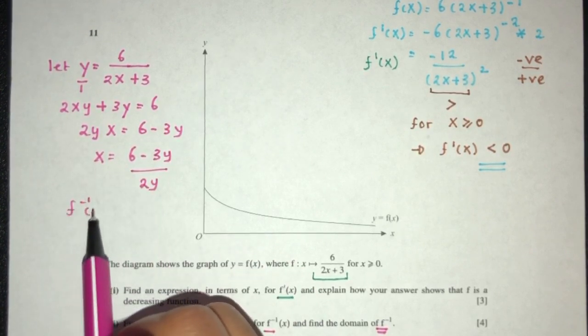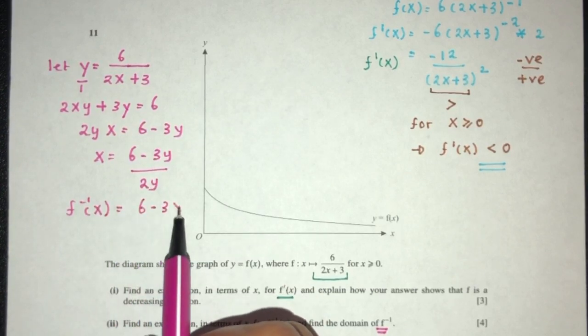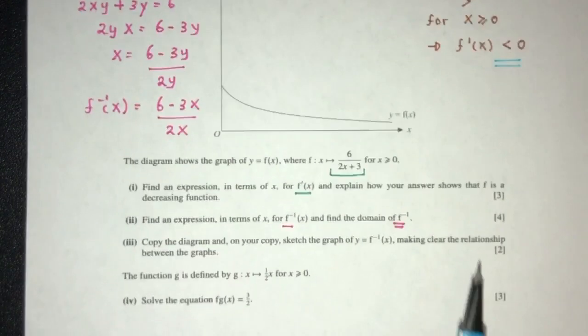So f inverse, in terms of x, we change y to x: (6 minus 3x) over 2x. That will be f inverse of x for part 2.